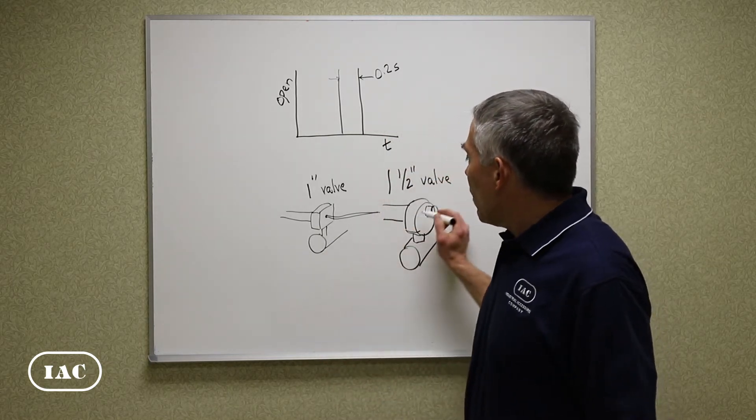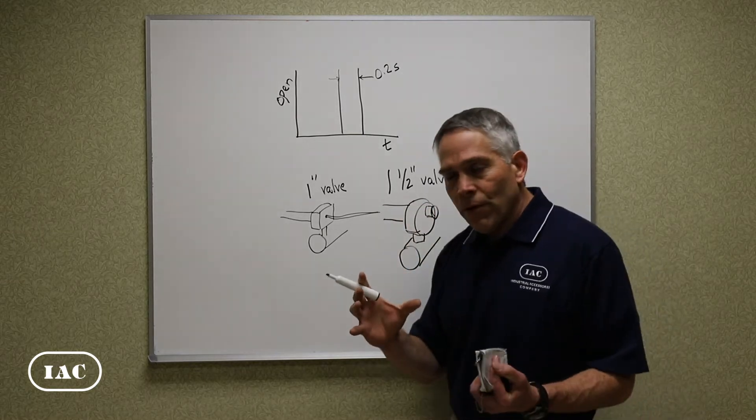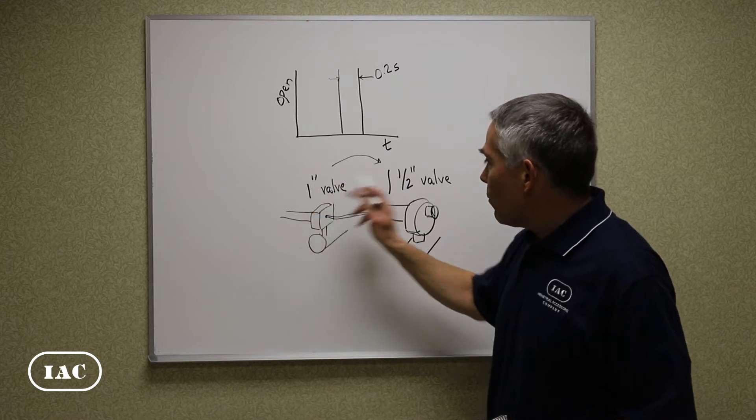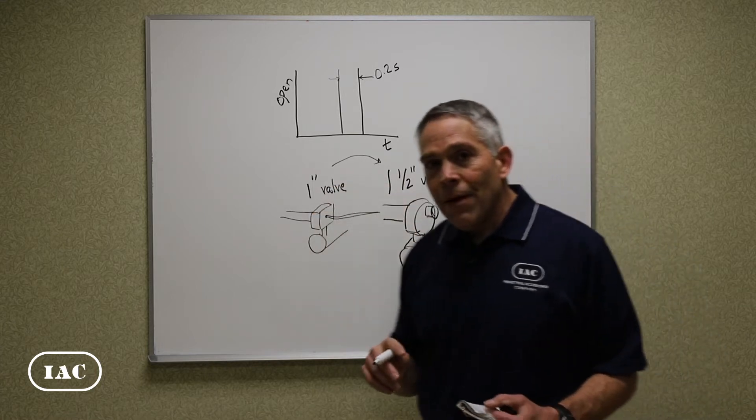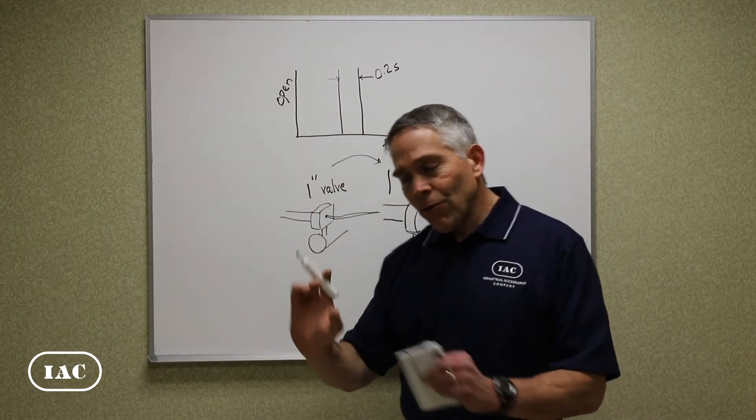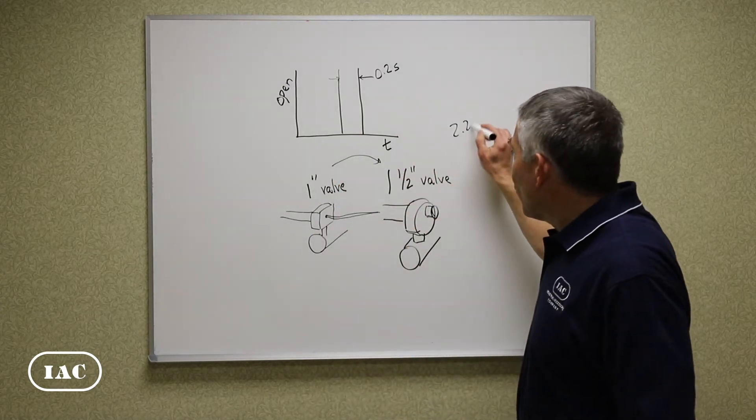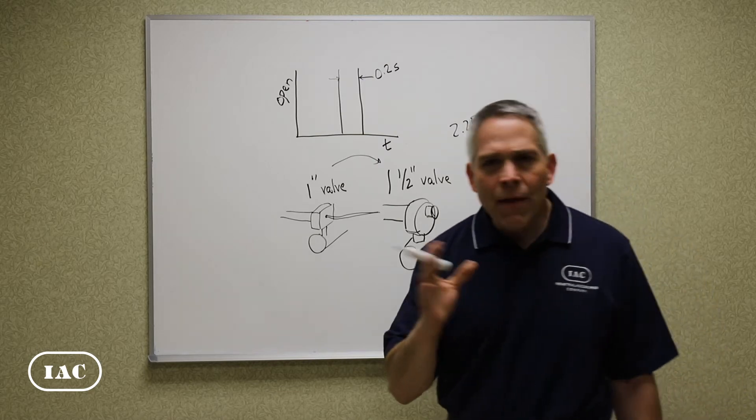So we're looking at an upgrade to an inch and a half valve. The inch and a half, as you can see, you would say well it's 50% bigger from one inch to an inch and a half but it's a lot more than that because you're talking an area of a circle. So it's actually 2.25 times bigger if my math is right.